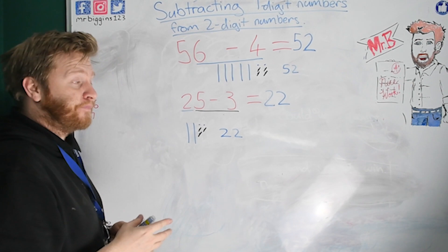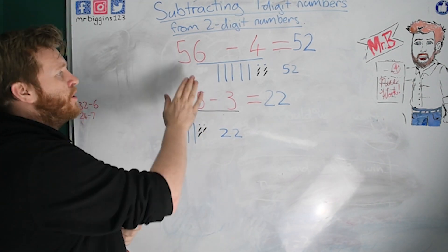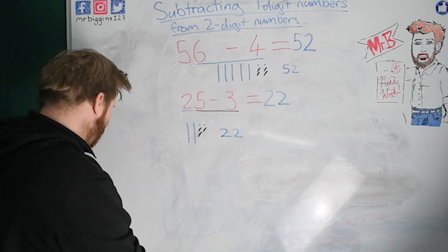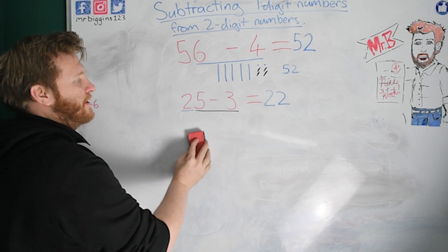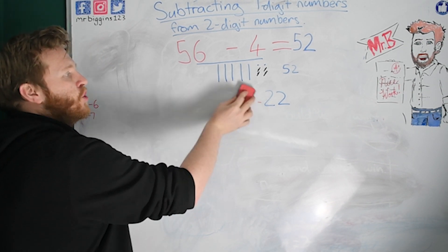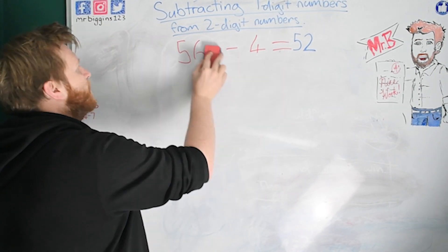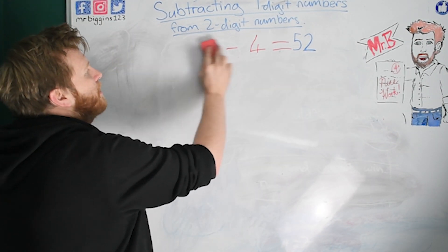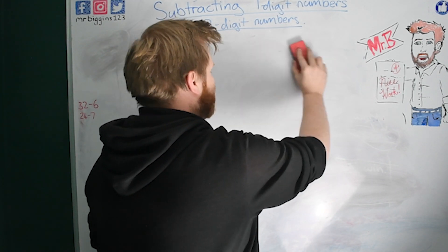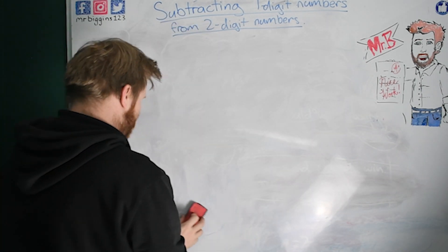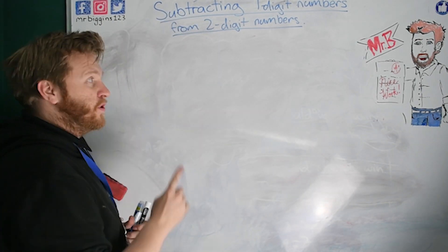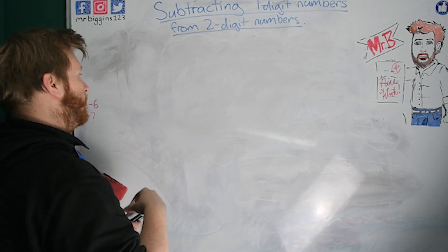Now those sums there, use whichever method you find gets you the right answer. And as you get more confident, you might start to use the more efficient, the quicker ways of doing it. But if you need to draw your tens and ones, do it. If you can notice that you just have to take away your ones, do it. If you can count backwards, that's the quicker and more efficient way for those ones, you can do it.